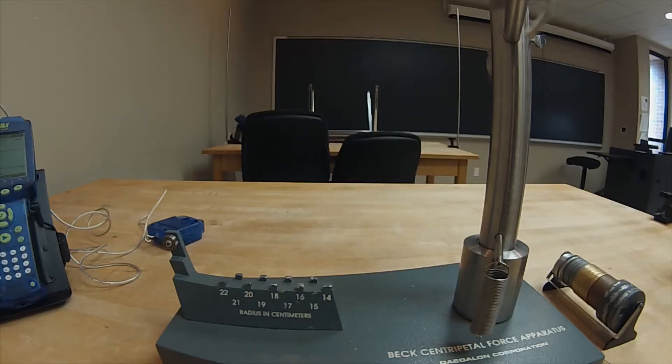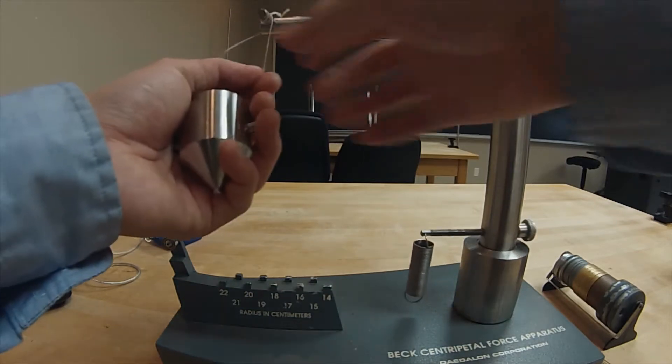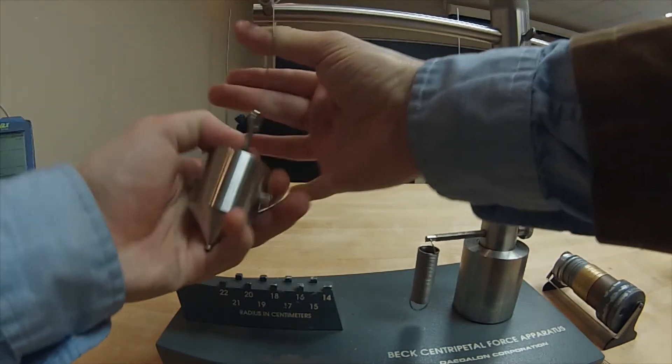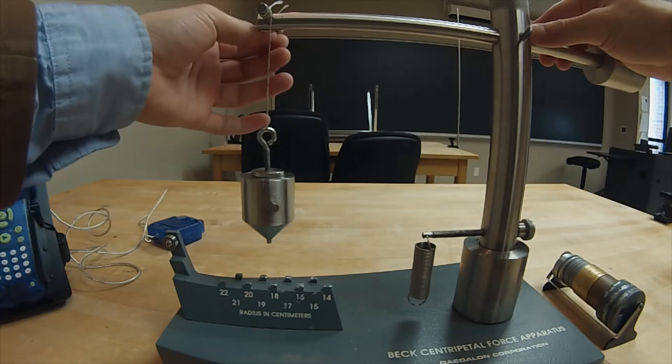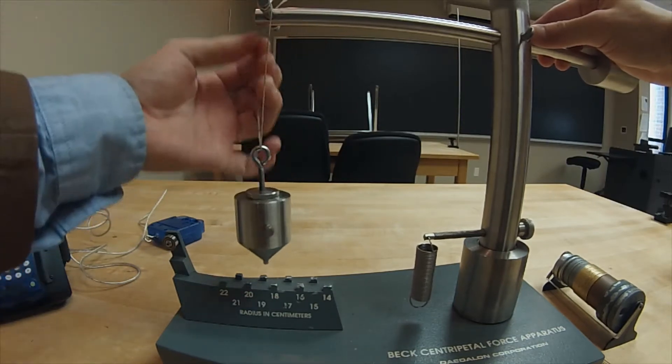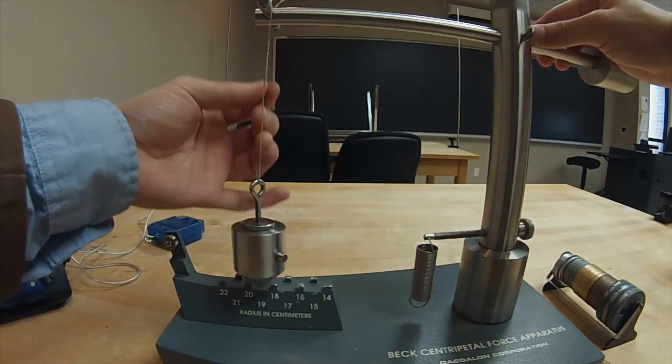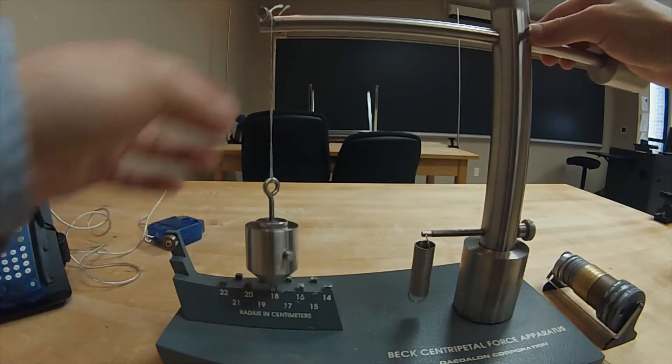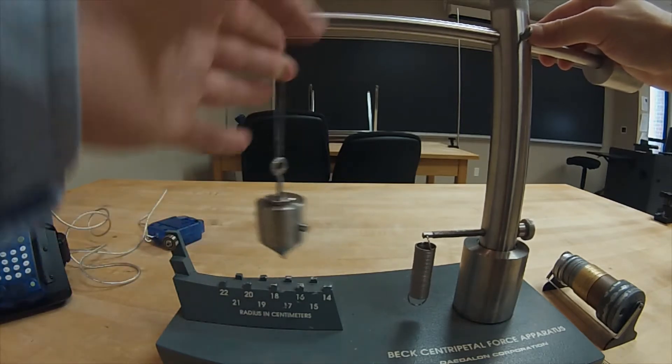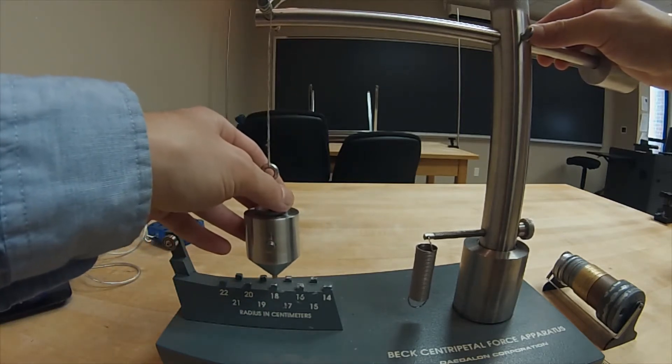We'll not attach the spring just yet. First, to set the radius of rotation, we'll need to adjust the height of the bob by unwinding the string on the crossbar. However, we want to be careful not to unwind too much string, because we do not want the tip of the bob to come in contact with the radial measuring scale.